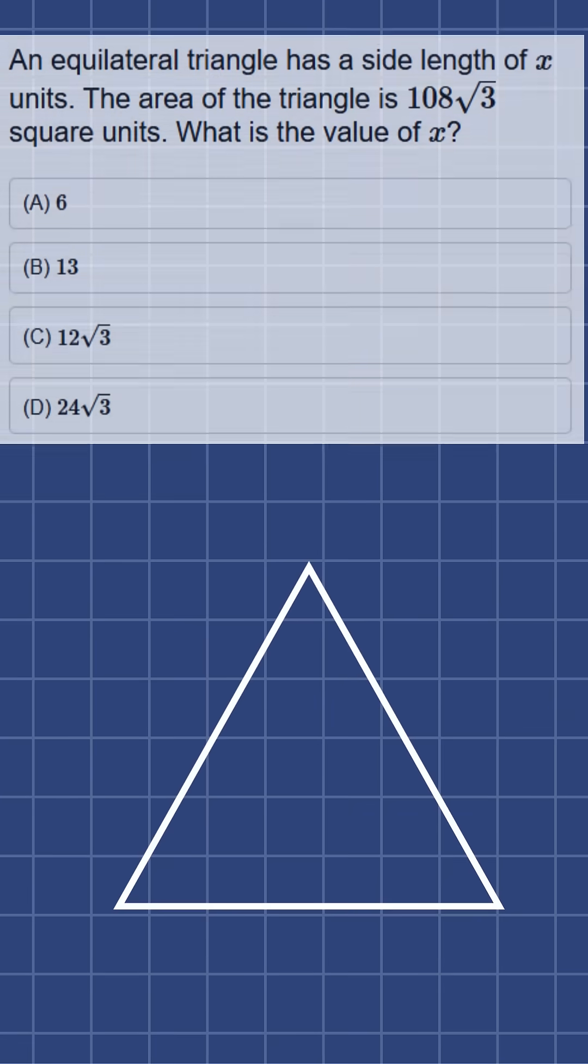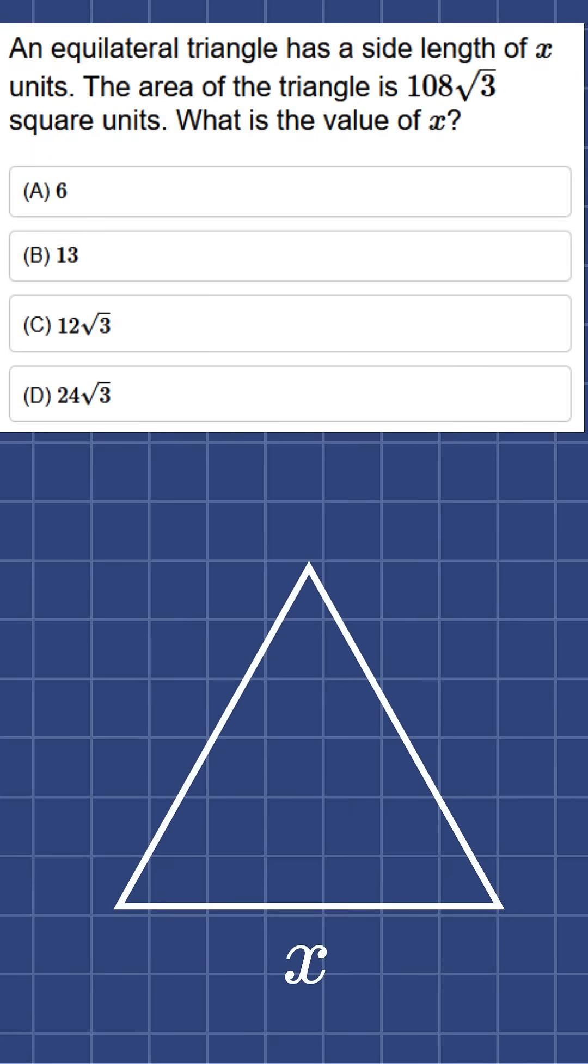So our triangle has sides of length x. To find the area, we first drop an altitude from one vertex to the opposite side, splitting the triangle into two right triangles.